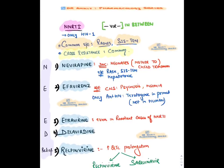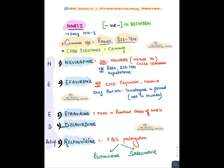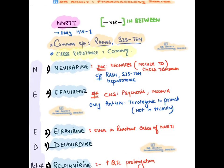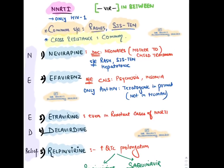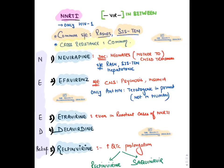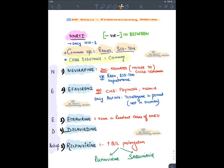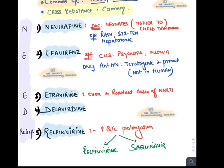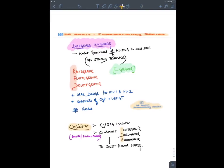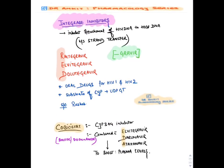NNRTIs all have '-vir-' in between and are only effective against HIV-1. They are non-competitive inhibitors and do not require phosphorylation. Common side effect: skin rashes and Stevens-Johnson Syndrome/Toxic Epidermal Necrolysis. Drugs: Nevirapine (N — drug of choice for neonatal prophylaxis/vertical transmission prevention), Efavirenz (causes psychosis; previously considered teratogenic in animals but now given in pregnancy), Etravirine, Delavirdine, Rilpivirine. Rilpivirine causes QT prolongation. No anti-HIV drug is absolutely contraindicated in pregnancy.